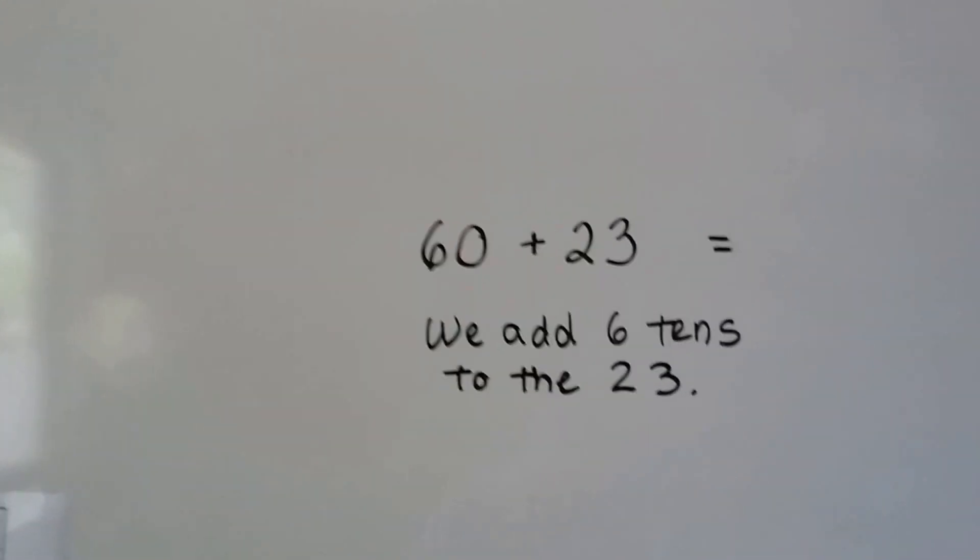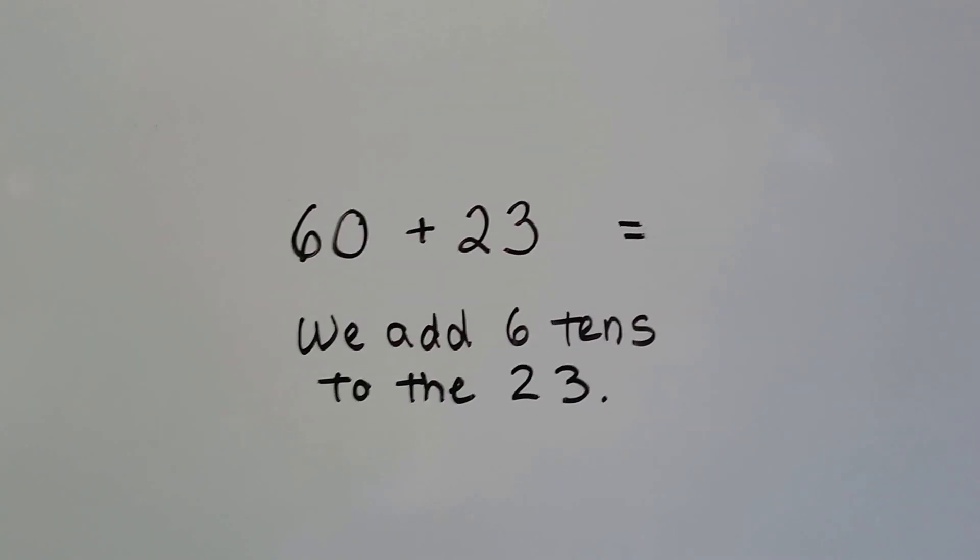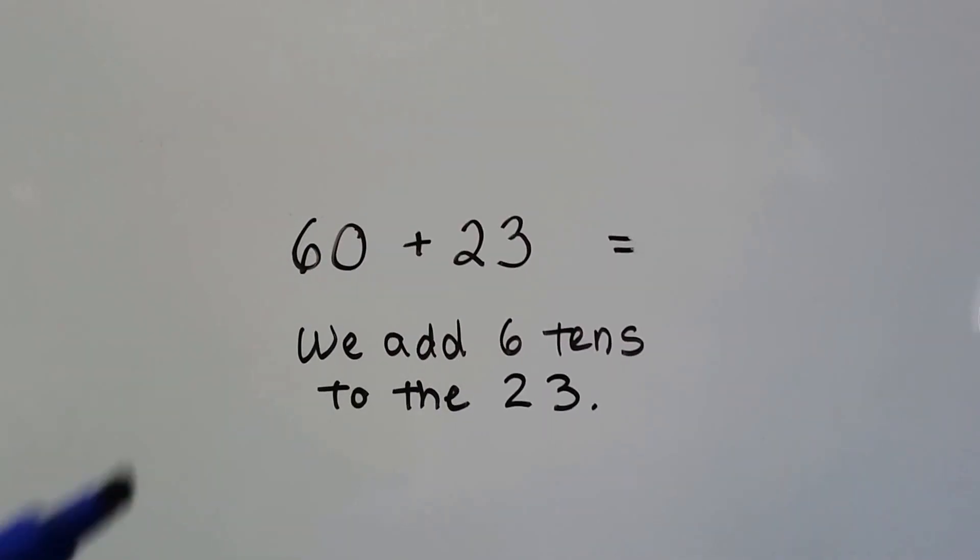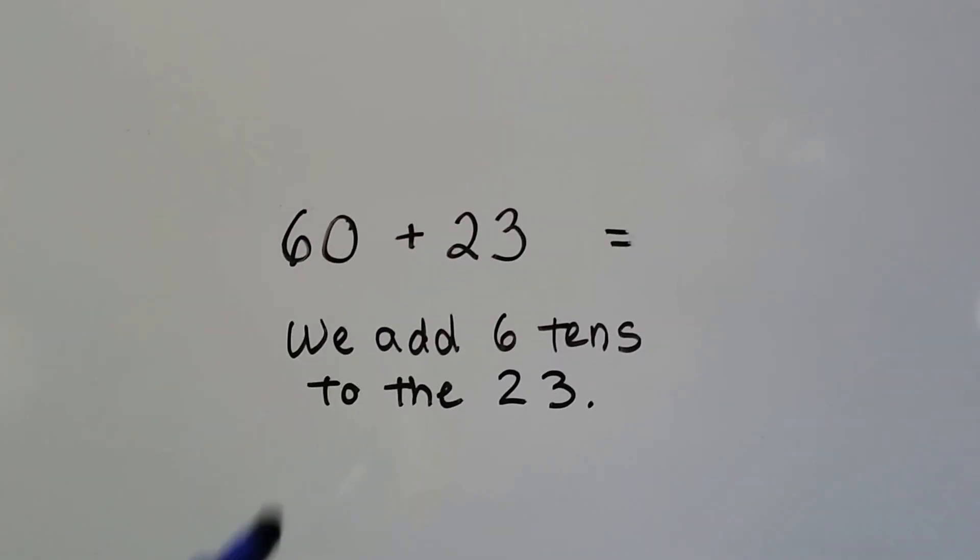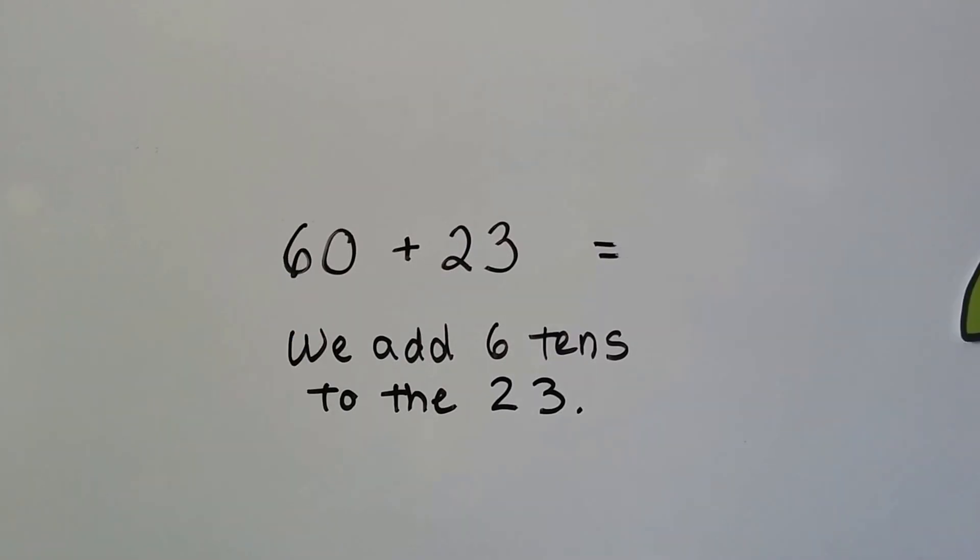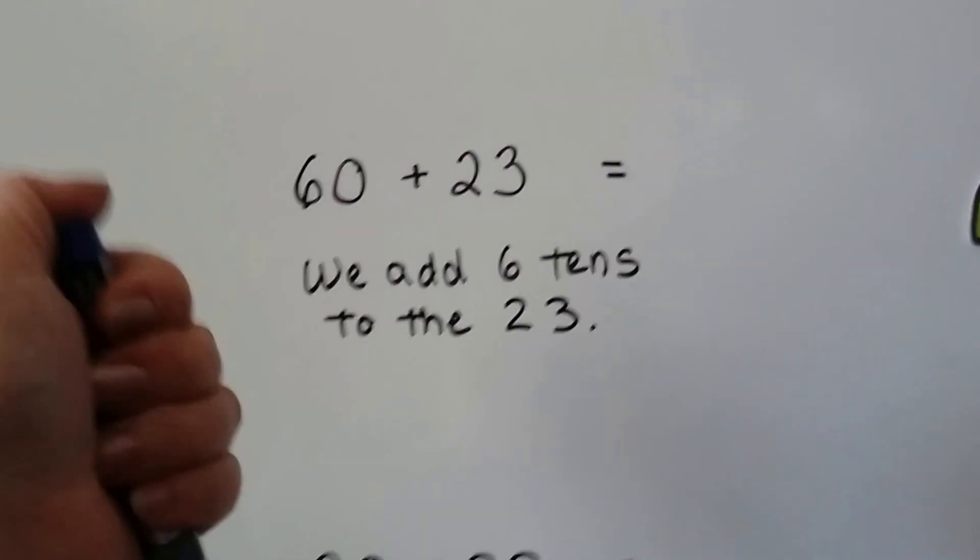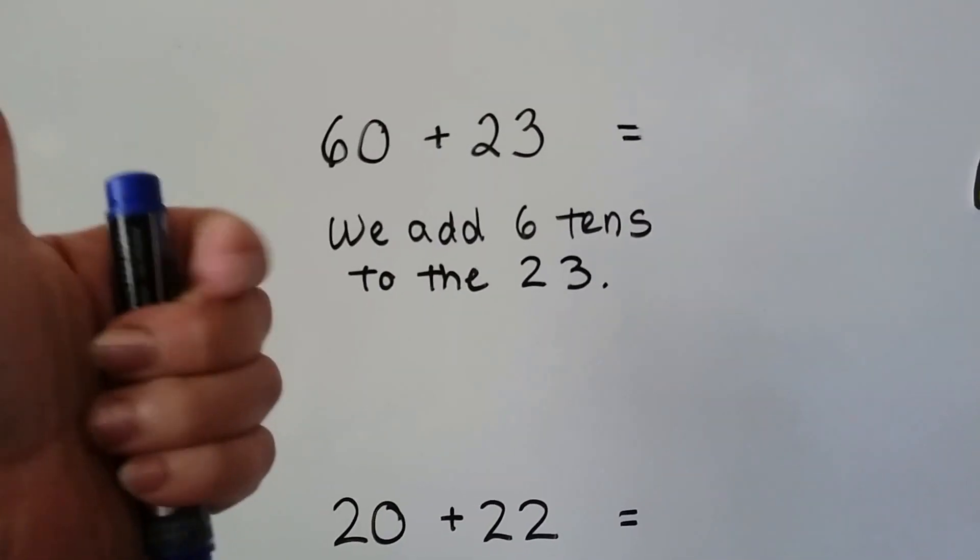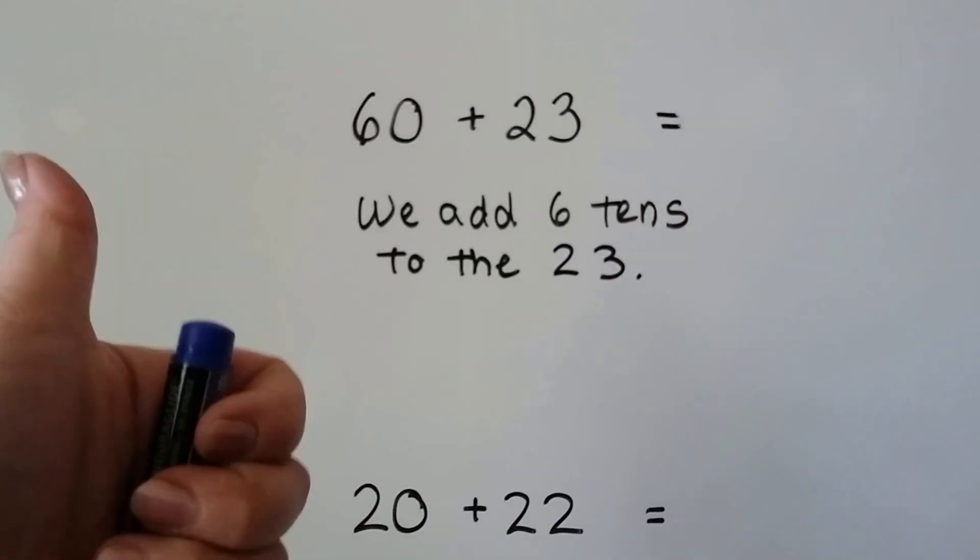Let's see if we can do this without the 100 board. 60 plus 23. We add six tens to the 23. So we can start with the 23 and count by tens six times because we're adding six tens. 23, 33, 43, 53, 63, 73, 83.